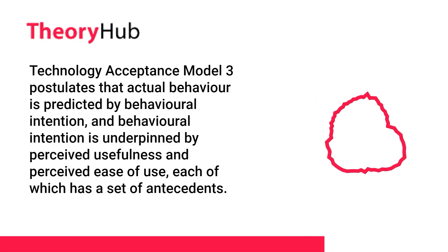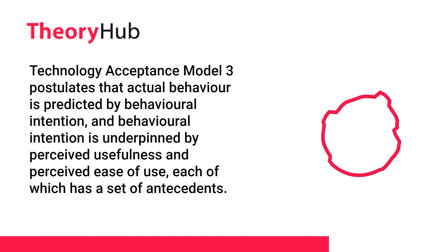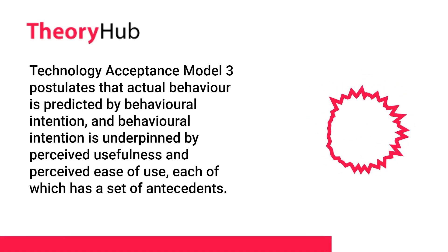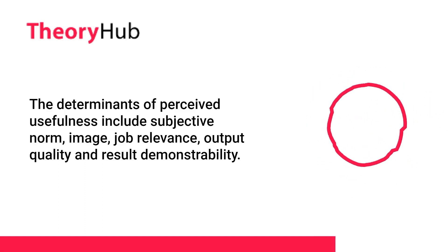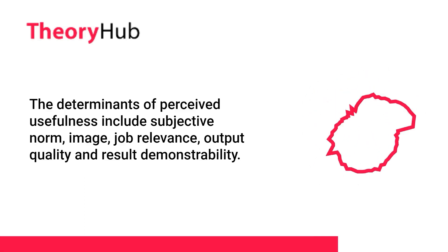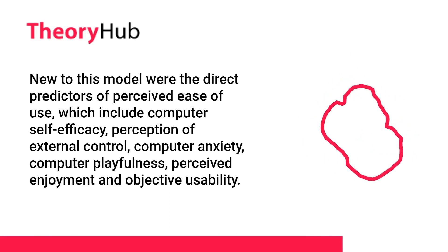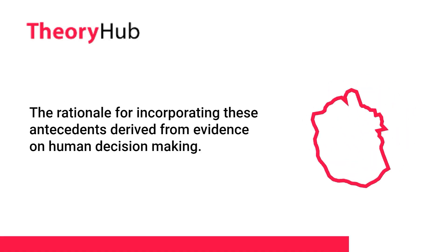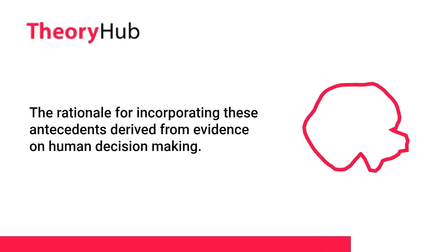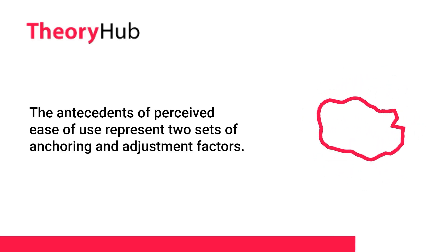Technology Acceptance Model 3 postulates that actual behavior is predicted by behavioral intention, and behavioral intention is underpinned by perceived usefulness and perceived ease of use, each of which has a set of antecedents. The determinants of perceived usefulness include subjective norm, image, job relevance, output quality, and result demonstrability. New to this model were the direct predictors of perceived ease of use, which include computer self-efficacy, perception of external control, computer anxiety, computer playfulness, perceived enjoyment, and objective usability. The antecedents of perceived ease of use represent two sets of anchoring and adjustment factors.